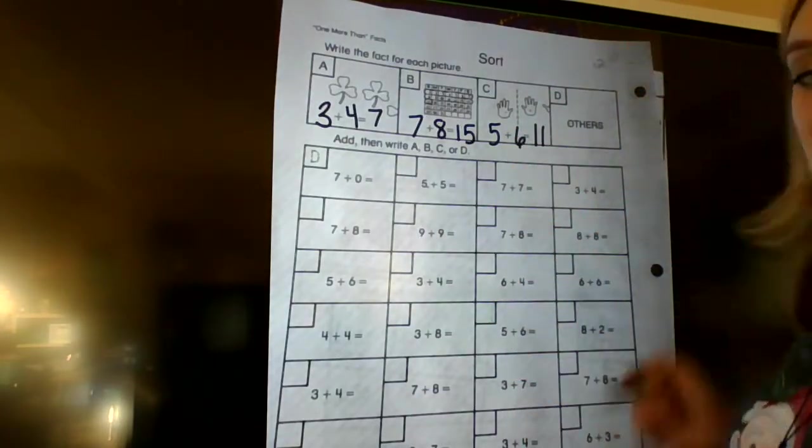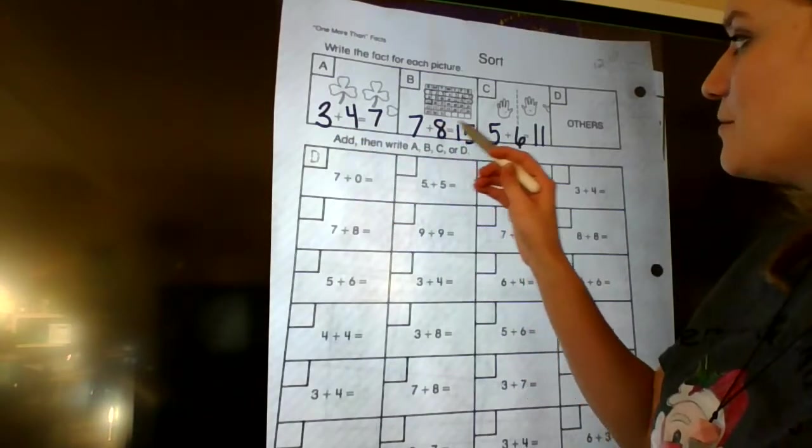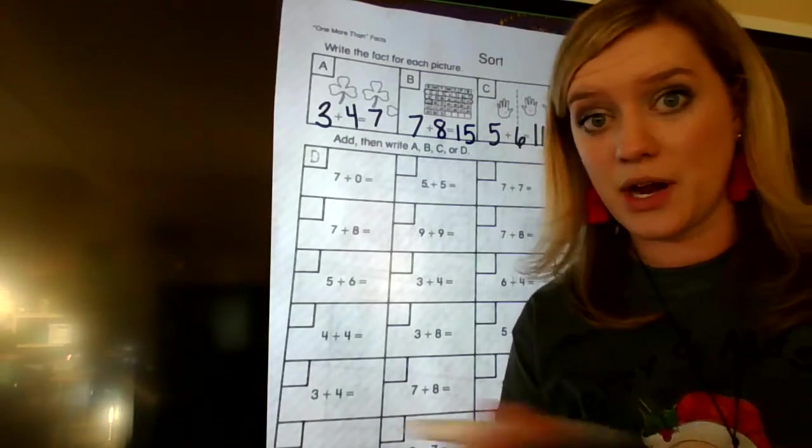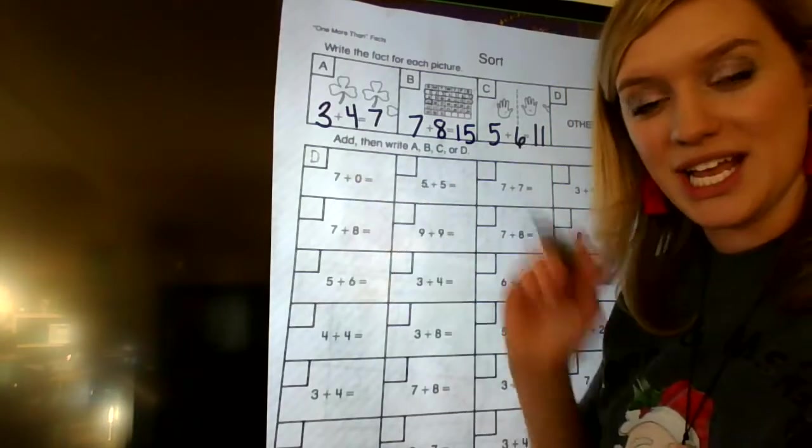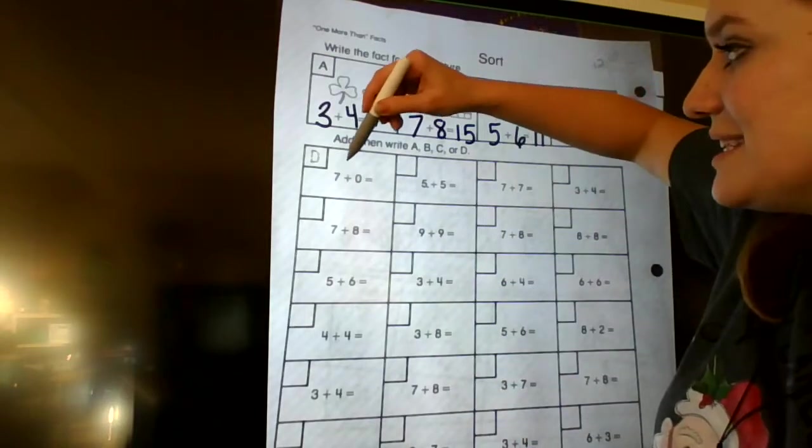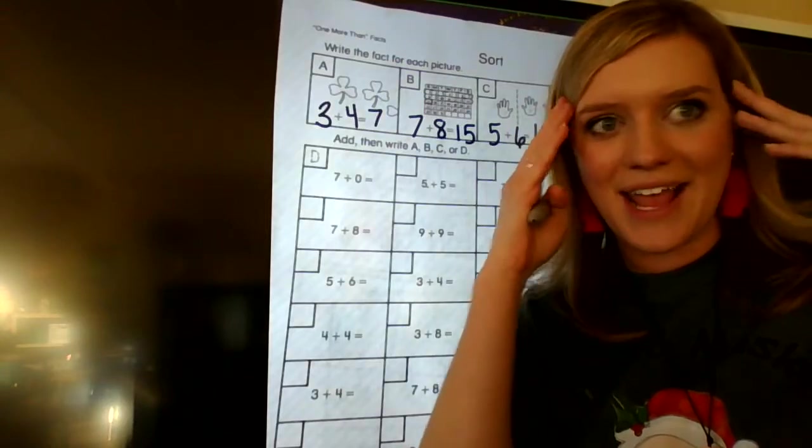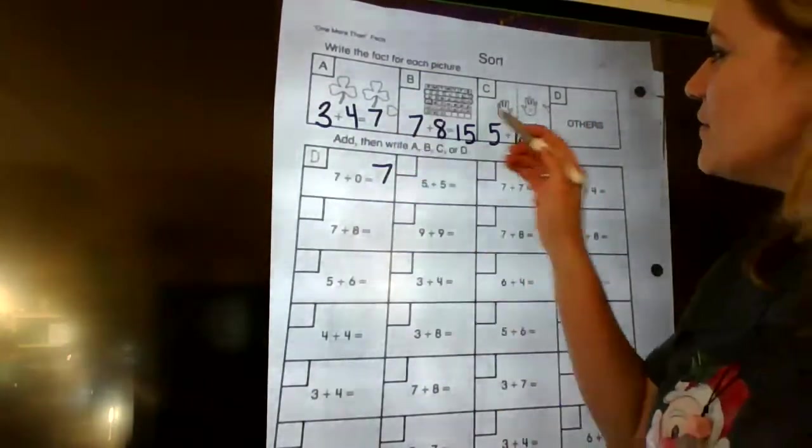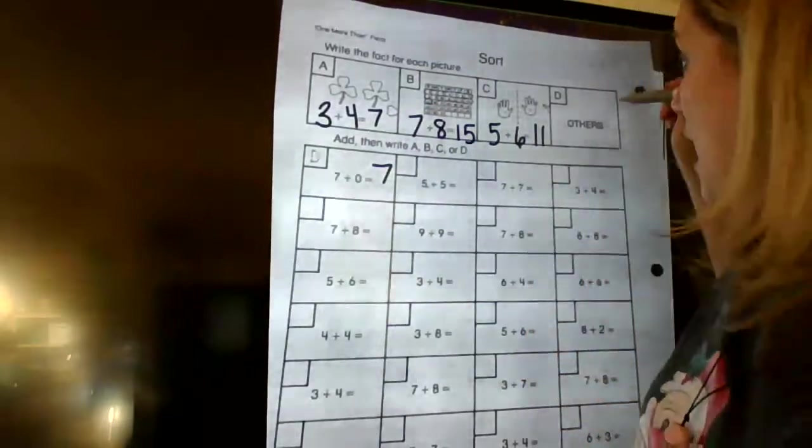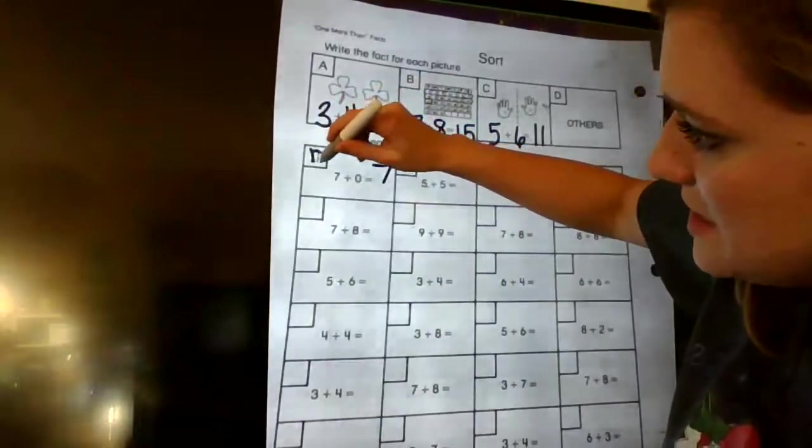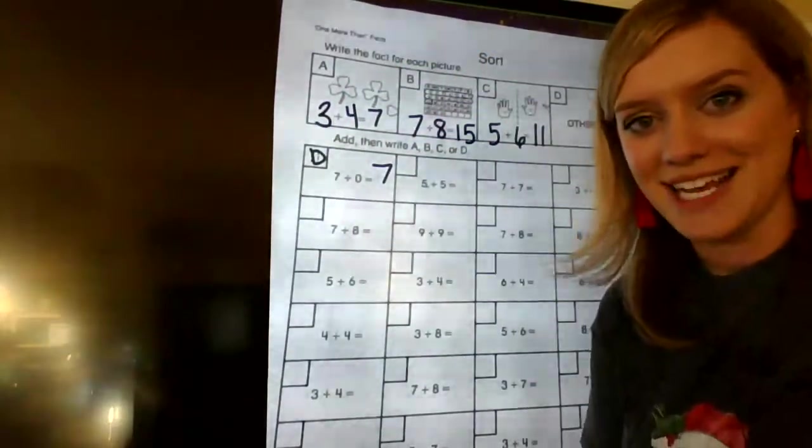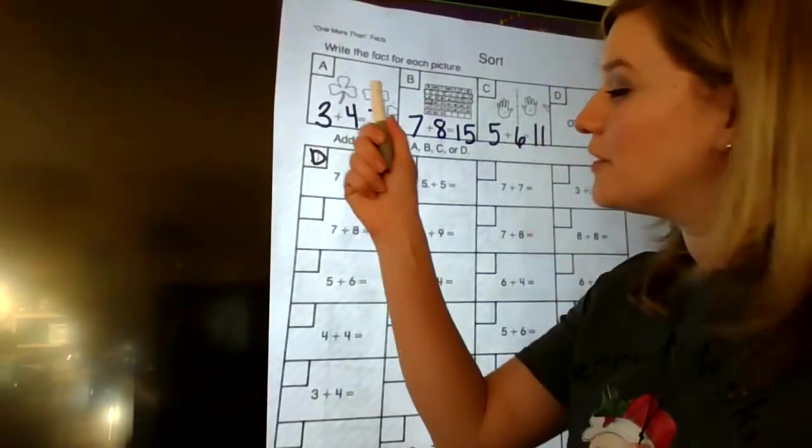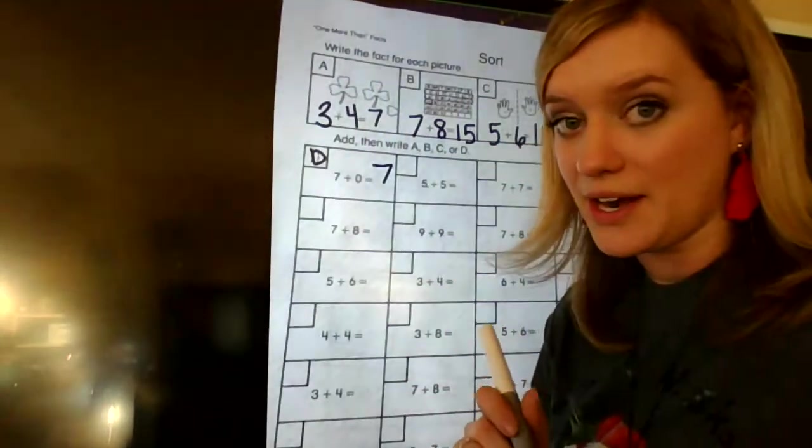And then the letter D is going to be all other problems. So if it's not 3 plus 4 equals 7, 7 plus 8 equals 15, or 5 plus 6 equals 11, if it's not one of those three, then it's going to be letter D. It's another problem. So we're going to solve them, put the matching letter in the box. So let's look at the first one, 7 plus 0. Well, that's an easy one, 7, and I count on none. 7 plus 0, it stays the same. It stays at 7. We added no more onto it. Is that one of those problems that we solved? No, that is another problem. So that is letter D. It kind of helped us out and traced it, so we're going to just trace that letter D.